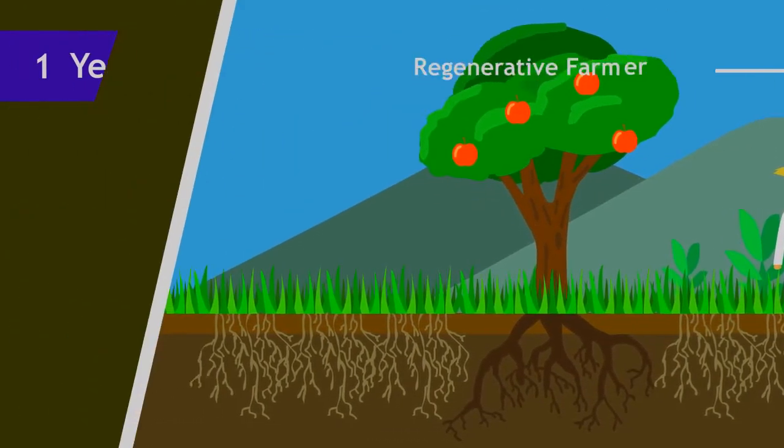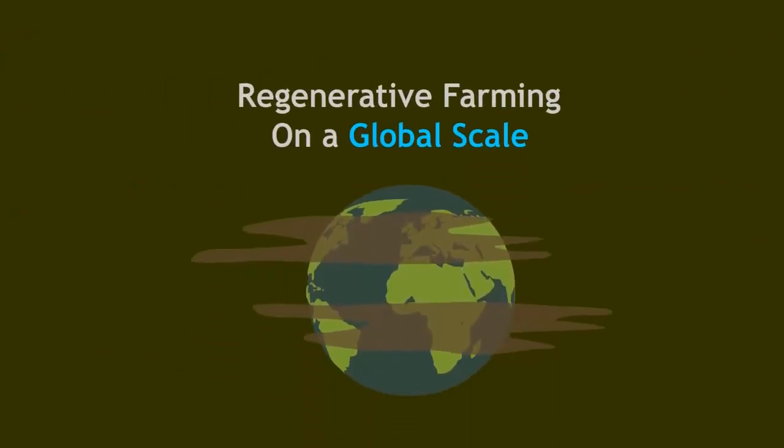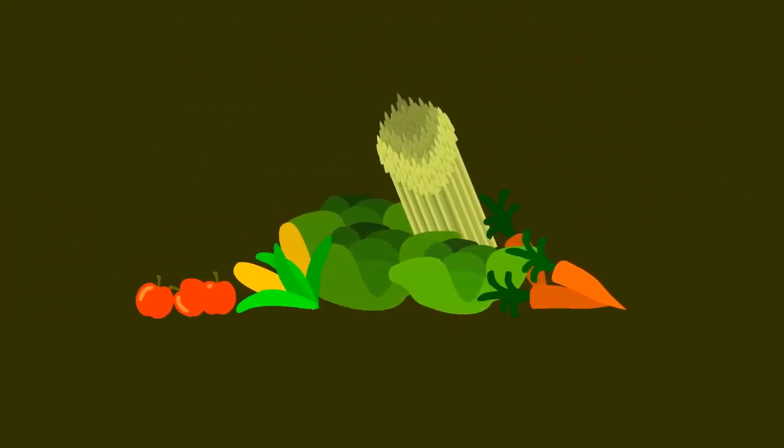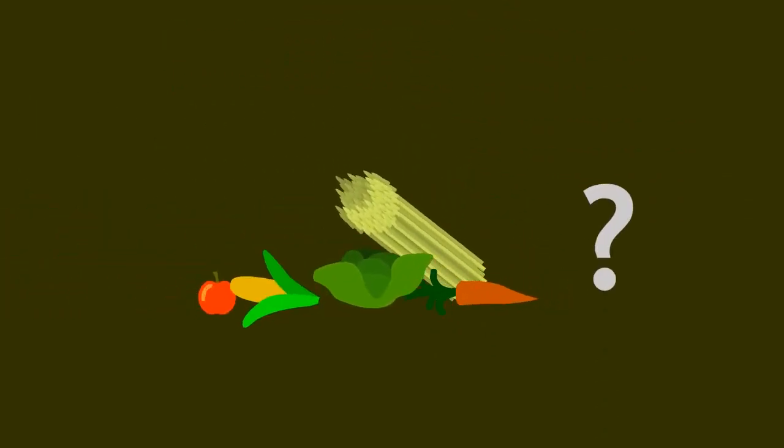And if these practices were adopted on a global scale, according to some estimates, it could offset all emissions. We could begin drawdown, like right now, but we'd sacrifice agricultural productivity, right?